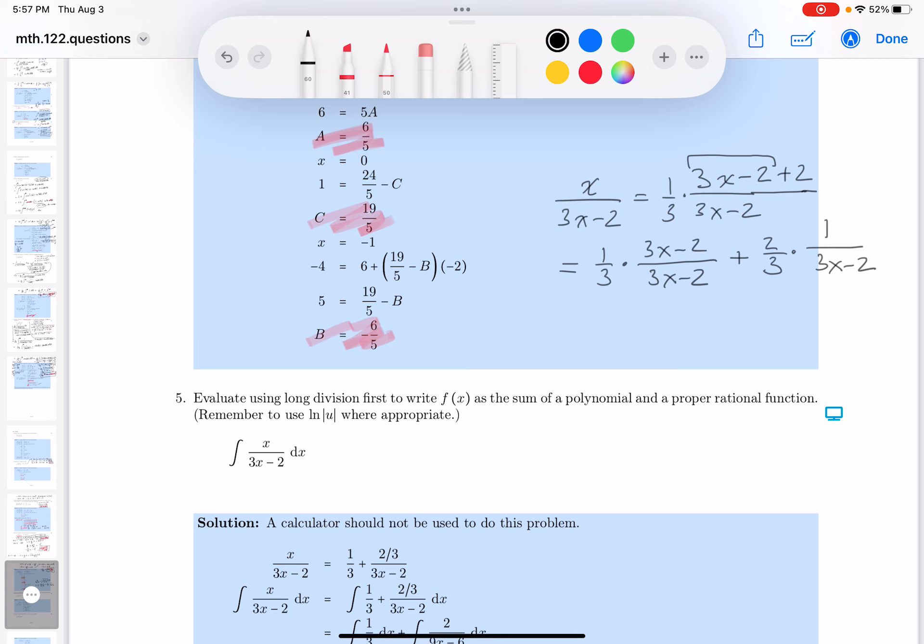plus, I'm going to write this as two-thirds times 1 over 3x minus 2. All right. What does this give me? Well, at least conditionally, I get one-third because 3x minus 2 cancels 3x minus 2, provided some conditions are met. I'm not too worried about that. Two-thirds times 1 over 3x minus 2. So I could take this integration and write that down instead, which is one-third plus two-thirds, 1 over 3x minus 2 dx.